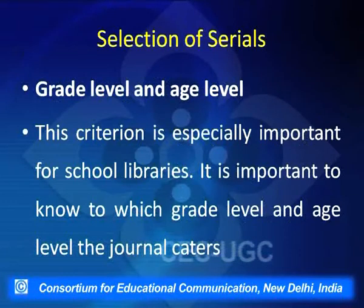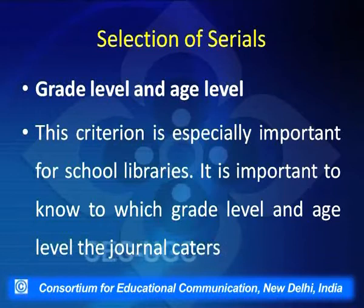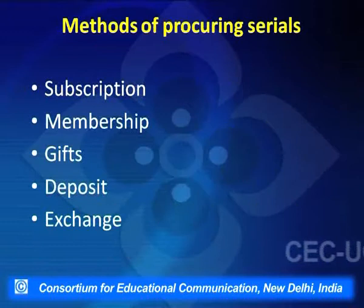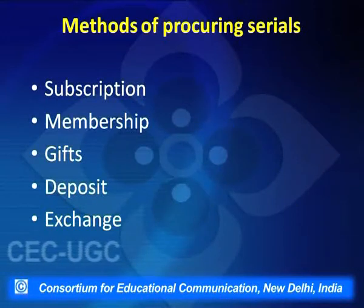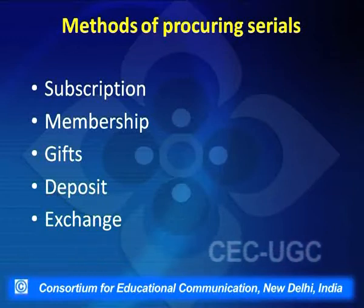Grade level and age level is a criterion specially important for school libraries. It is important to know which grade level and age level the journal caters to. We have seen that libraries have a procurement policy with written procurement policies, and there are different parameters or criteria which should be used for selecting serials.